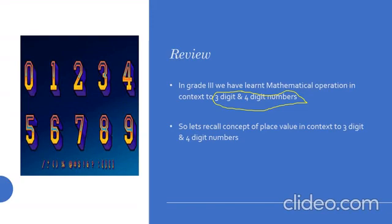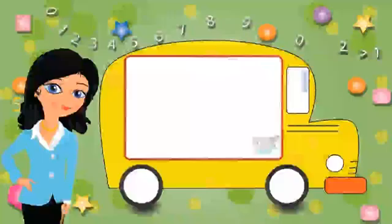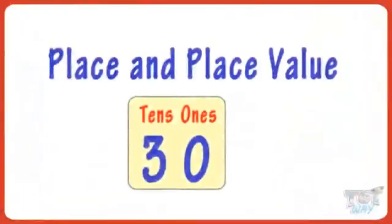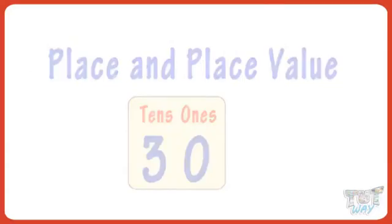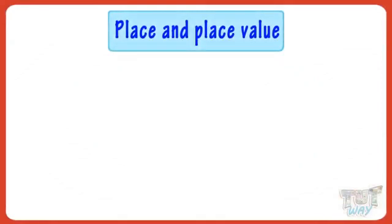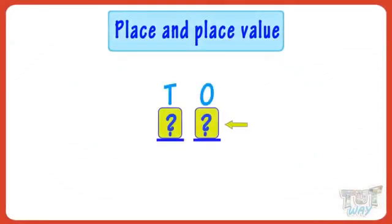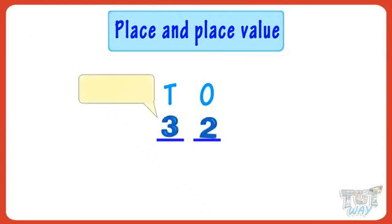And for this, I would like to show you all a video. Hi kids. Today, we will learn what is place and place value of a digit in a number. So let's get started. Place is the position of the digit in a number. Example, here we have a number. Place of 3 in this number is 10's place.